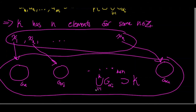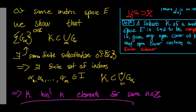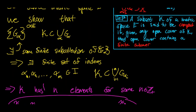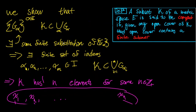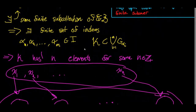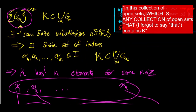Therefore, we have shown that for any collection of open sets that is an open cover for our finite set K, there must exist some finite sub-collection of that open cover such that that finite sub-collection is a finite sub-cover for K — that is, a union of a finite number of those open sets in this collection contains K.